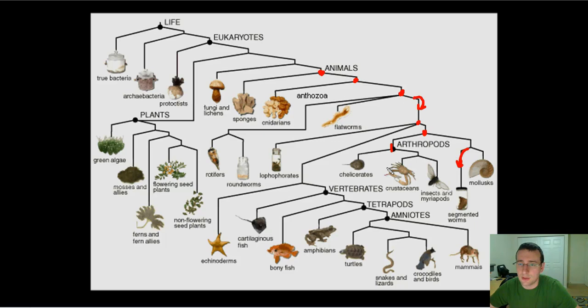But appendages are on this branch but not on that branch, and this one does not have segmentation, even when this does. So do you go by appendages or do you go by segmentation to split them? And that's kind of how it gets confusing.